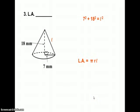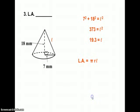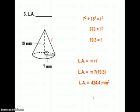7 squared plus 18 squared equals L squared. That gives us L equals 18.3. Plug that into our formula, and our lateral area is 424.4 square millimeters.